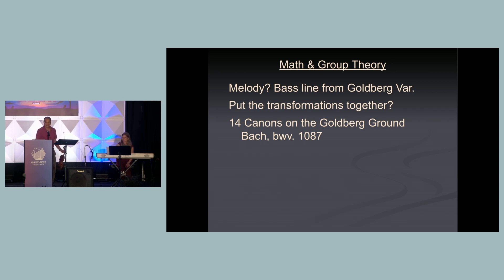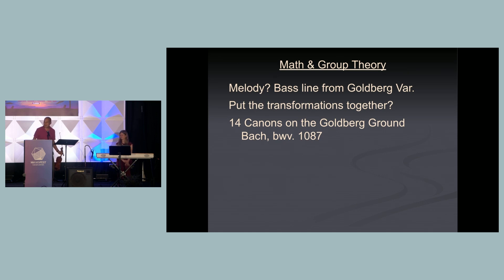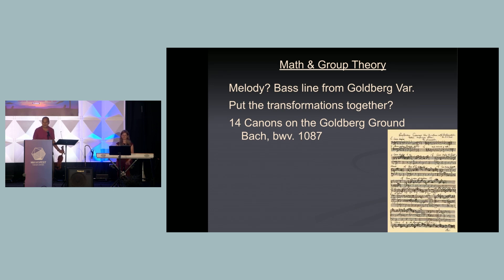Bach wrote that as part of the Goldberg Variations, and then as a separate exercise he took this aside and turned it into 14 different canons. It's a piece now called the 14 Canons on the Goldberg Ground, and there are some amazing things about it. Among other things, it was not discovered until the 1970s — long after Bach was gone. We know it was Bach because it was found in a copy that can be traced back. It's about six minutes of music from a single sheet, and the way you get six minutes out of a single sheet is ingenious and highly mathematical.